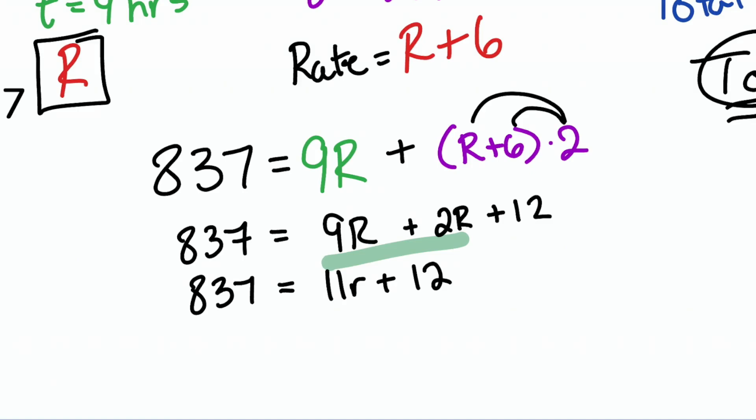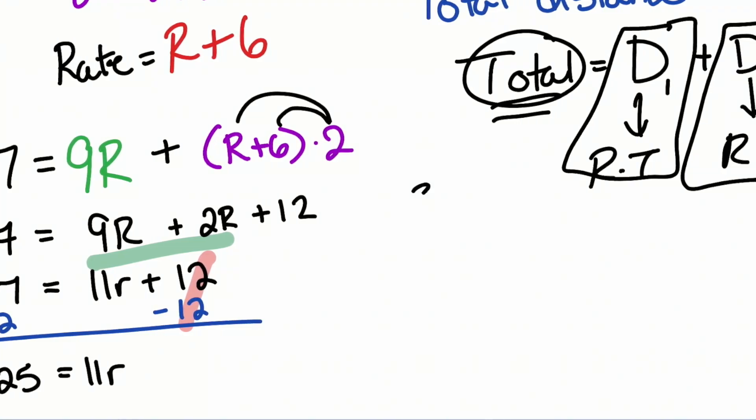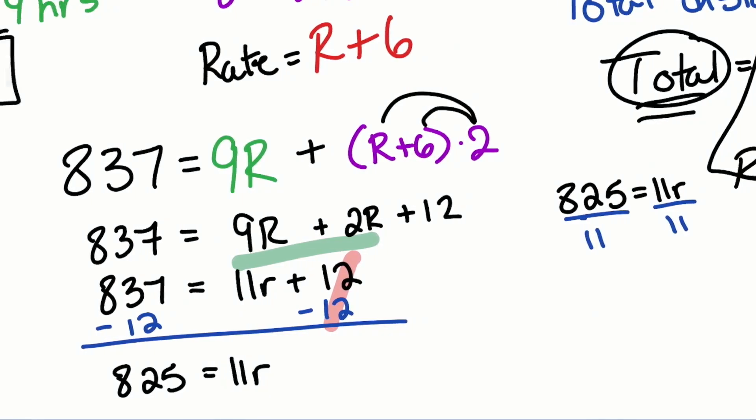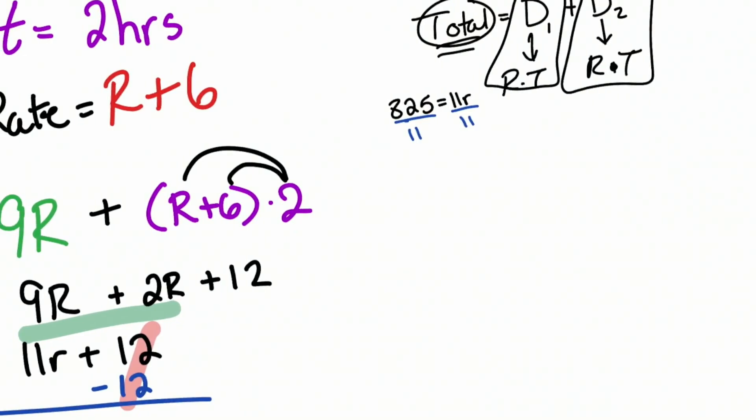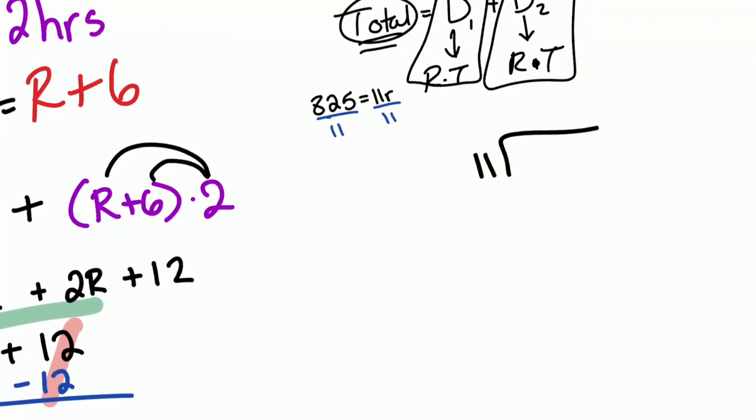Next we'll continue on. We'll solve this like a regular equation by subtracting 12 on both sides. Once we do that we see we have a cancellation on the right and we end up having 825 equals 11R. Let's divide both sides by 11. Now let's do some long division: 11 into 825. 11 into 82 is seven times, that's 77, so a remainder of 5. Drop that 5, 11 goes into 55 five times. There's your answer: 75.